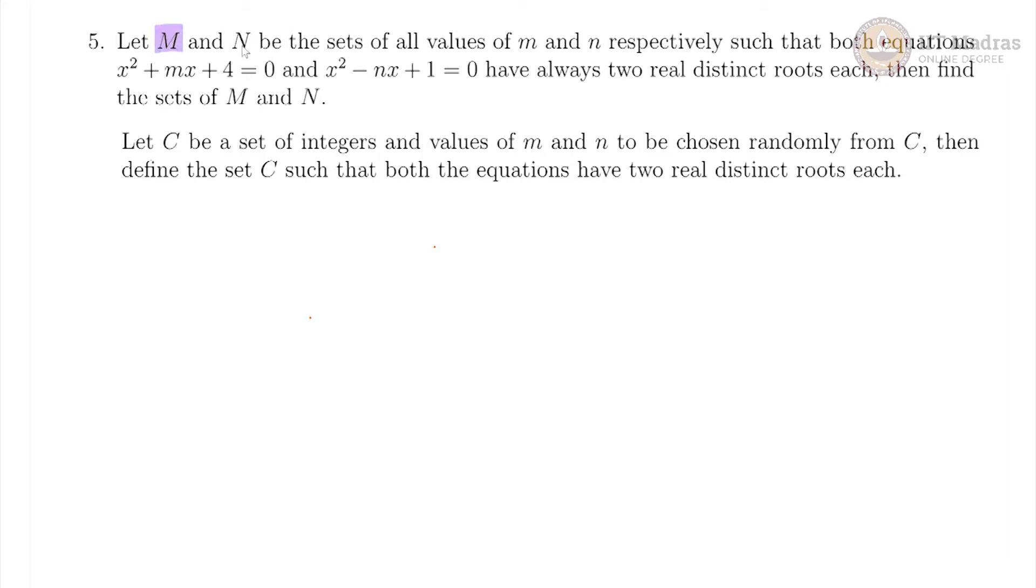In this question, we have two sets capital M and capital N, which are sets of all values of small m and small n respectively, such that these two equations have always two distinct real roots each, then find the sets M and N.